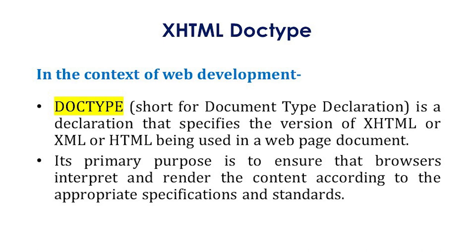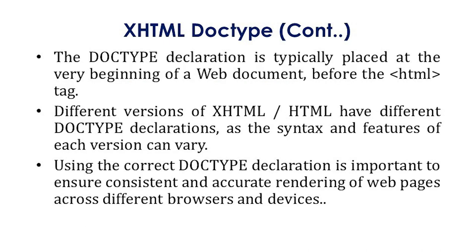First of all we will discuss XHTML doc type. In the context of web development, doc type is a short form of document type declaration. The doc type is a declaration that specifies the version of XHTML, XML, or HTML being used in a web page document. Its primary purpose is to ensure that browsers interpret and render the content according to the appropriate specifications and standards.